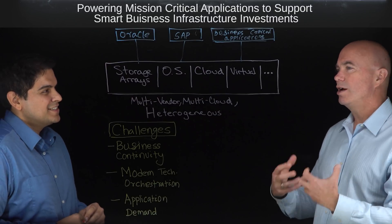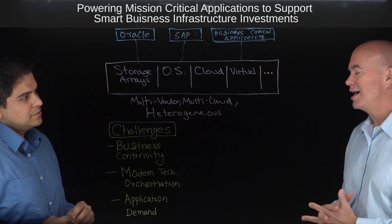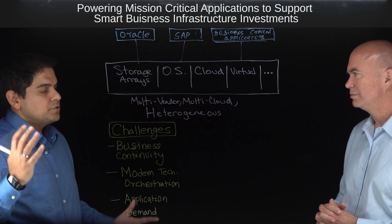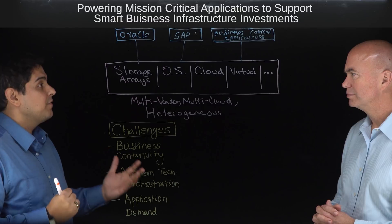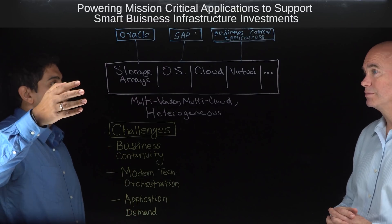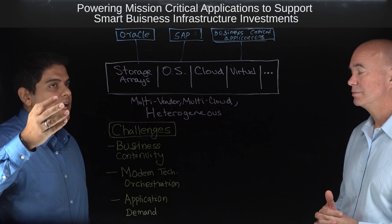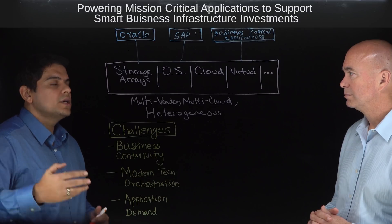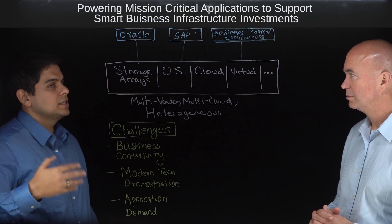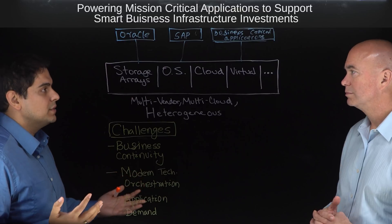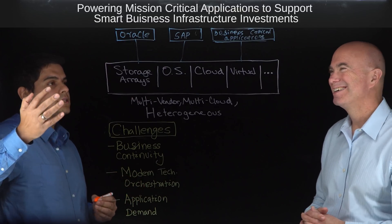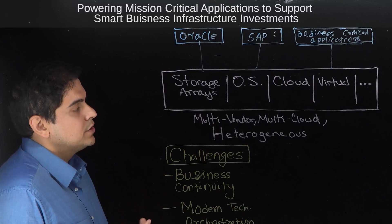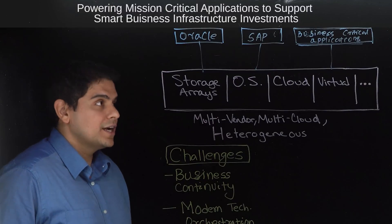So what are you guys doing to help this problem of all these high availability silos? IT as a sphere doesn't look anything like it did maybe five or ten years back. We have various different storage arrays including all-flash arrays, different operating systems, different cloud environments, and virtualized environments. What a typical IT environment looks like today is a multi-vendor, multi-cloud, heterogeneous environment.